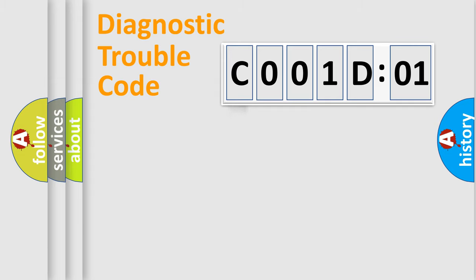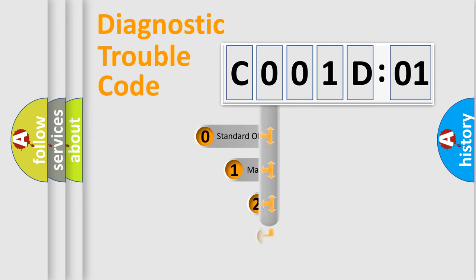Powertrain, Body, Chassis, Network. This distribution is defined in the first character code.